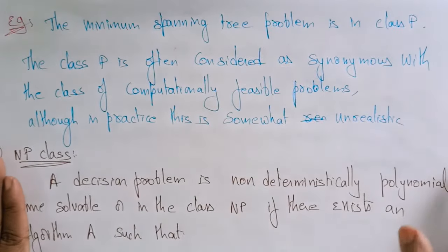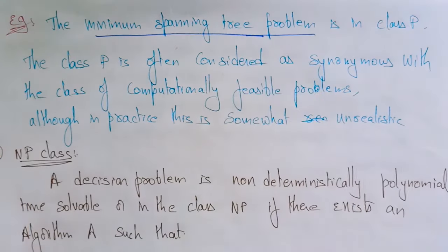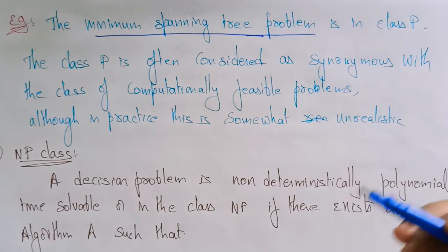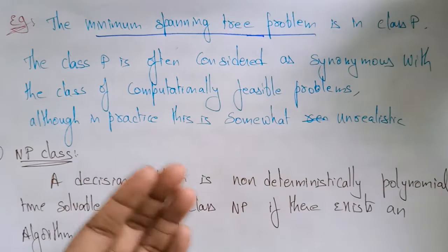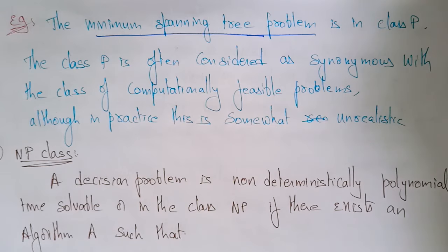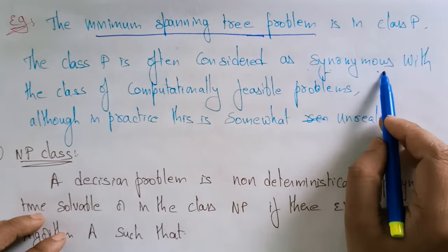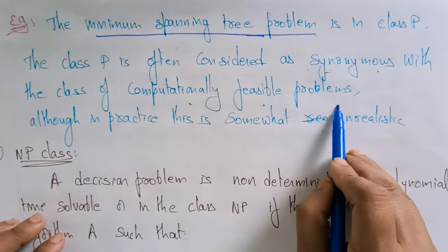An example of the P class is the minimum spanning tree. The minimum spanning tree problem is in class P. The class P is often considered synonymous with the class of computationally feasible problems, although in practice this is somewhat unrealistic.